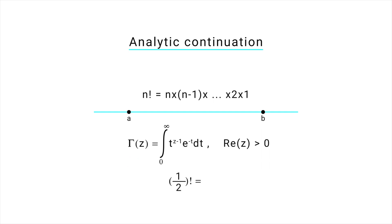Using the gamma function, we can find half factorial, which is equal to square root pi by 2.